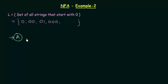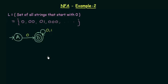From state A, on getting input 0, I send it to the next state B, and B should be my final state. My only condition is that the string should start with 0, so after reaching B I don't care what comes next — in B, whatever you get, 0 or 1, let it stay in B itself. This NFA is complete. In NFA, it does not matter even if you don't mention a transition for every input — this is a complete NFA.